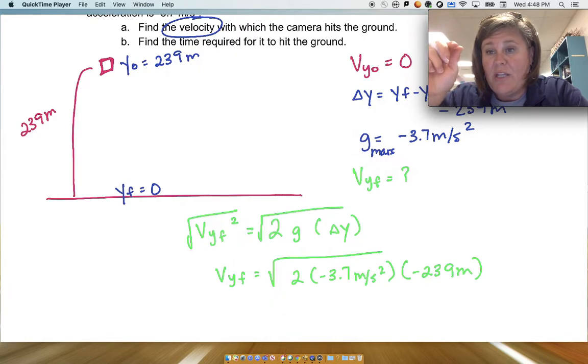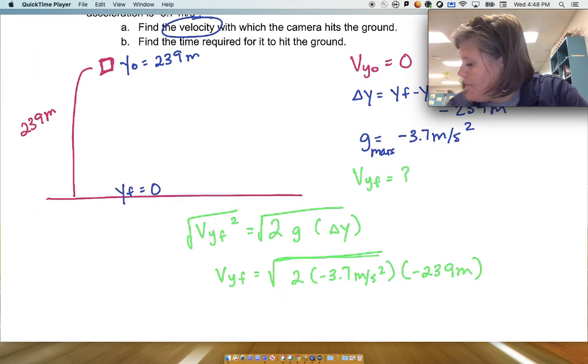Here's the thing. If you don't make the -239, if you don't make that negative, then you're going to try to take the square root of a negative number, which can't be done. Not in physics, not here.